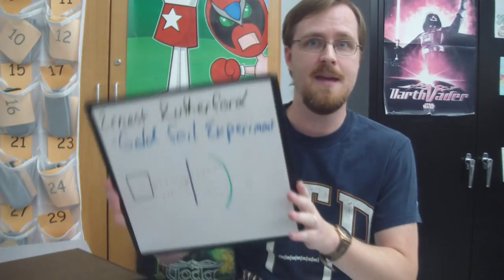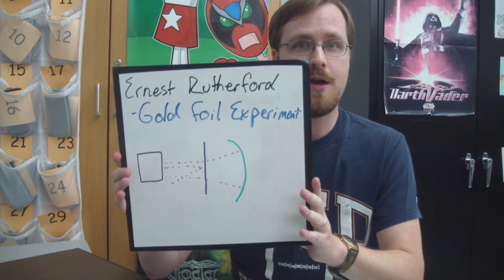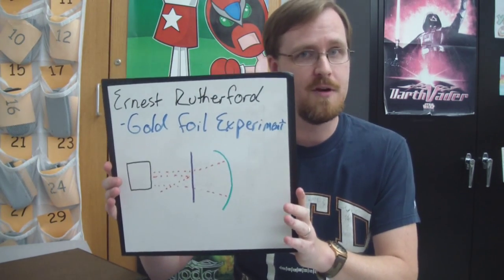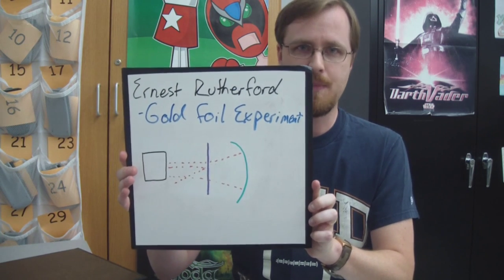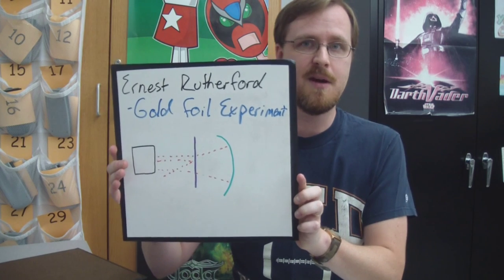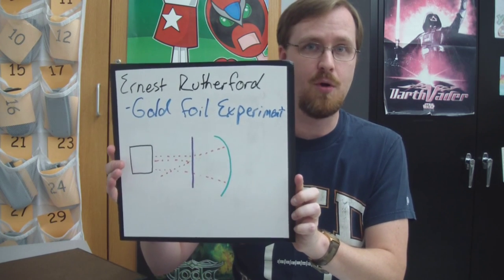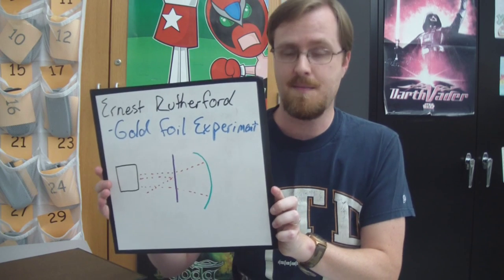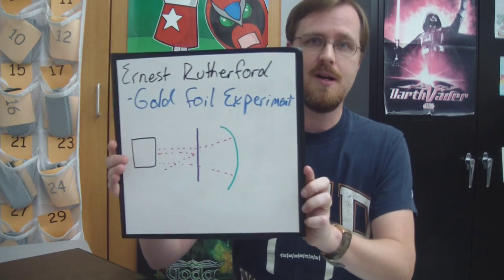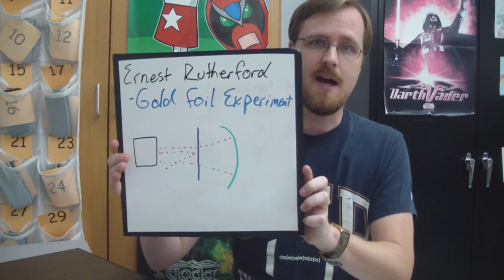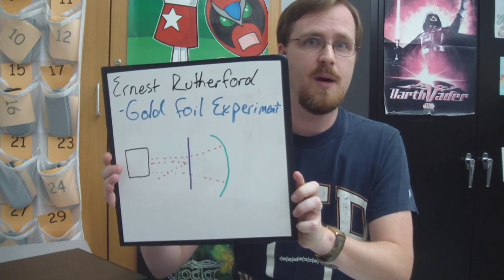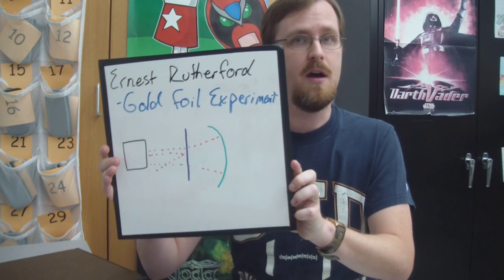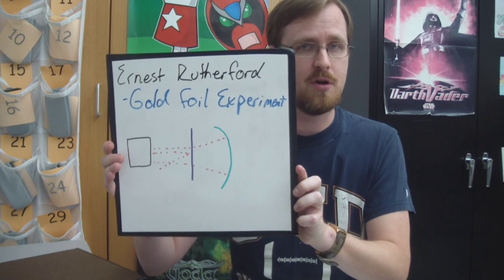The next scientist was one of Thompson's students who went by the name of Ernest Rutherford. Now Rutherford did a very famous experiment called the gold foil experiment. In that experiment he took a thin piece of gold foil — just like aluminum foil except made out of gold — put it in the middle, and on one side he had a special screen that could register radioactive particles.